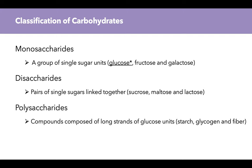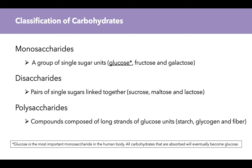We have certain classifications of carbohydrates: monosaccharides, disaccharides, and polysaccharides. Monosaccharides are a group of single sugar units, and for those we have glucose, fructose, and galactose. Glucose is underlined with a star because it is the most important monosaccharide — or most important carbohydrate — in the human body. All carbohydrates that are absorbed are going to eventually become glucose, and this is the currency of many of our energy systems. We use glucose to produce energy.